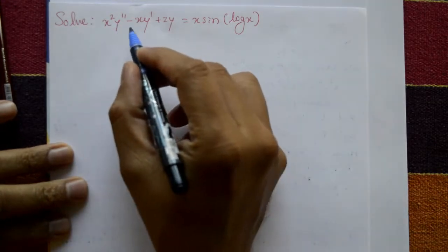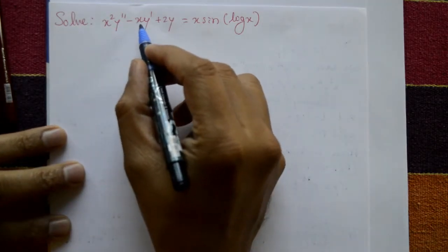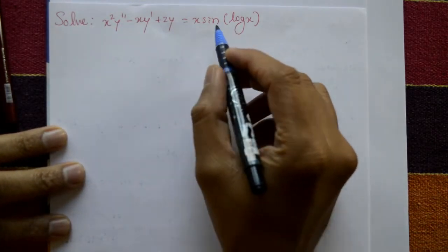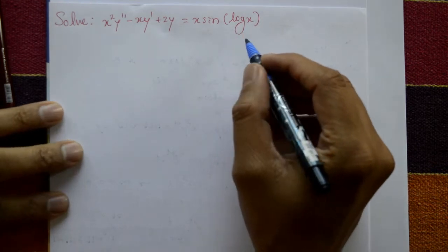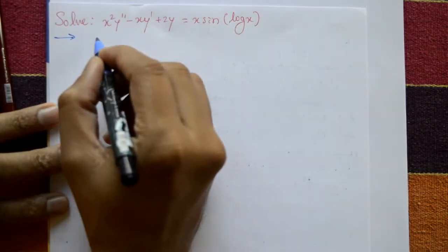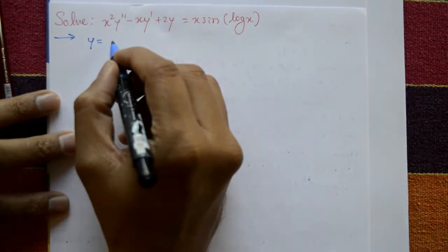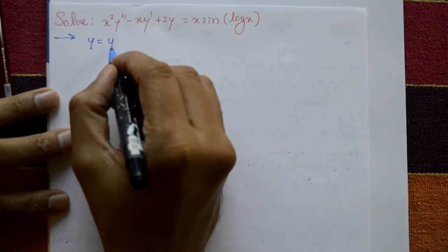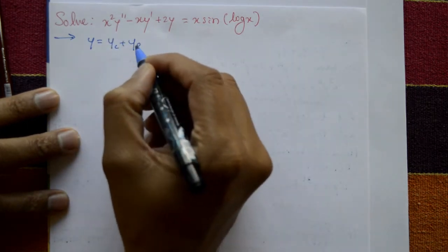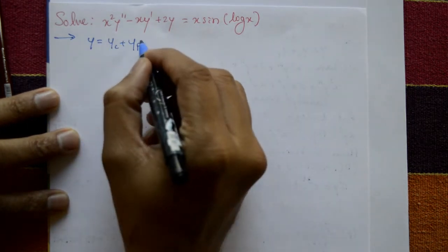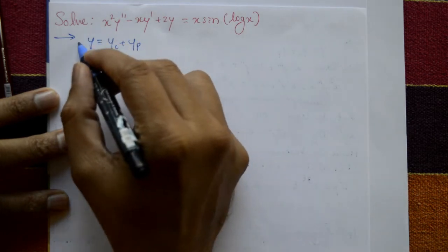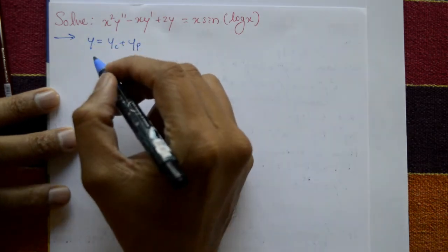Solve x² y'' - xy' + 2y = x·sin(log x). Find the complete solution, meaning y equals yc plus yp — complementary function plus particular integral. Add them to get the complete solution.